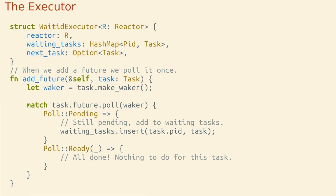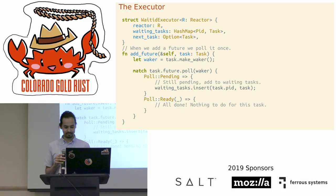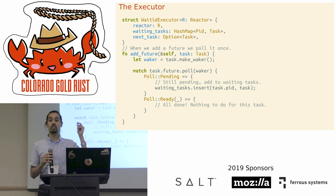The add_future method takes a task, makes a waker by telling the task to create one, then takes the future field and calls poll. On Pending — meaning the I/O is still being waited on — we add that task to waiting_tasks. On Ready, the future is already done, so we don't add it to waiting tasks at all. When we first add a future, we poll it once just to see what happens.